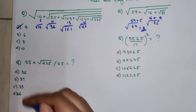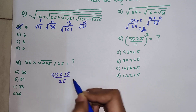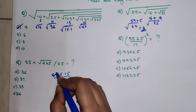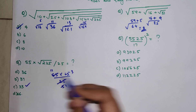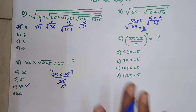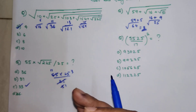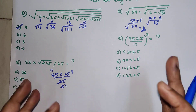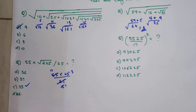Now over here we have 55 and root of 225, which we already know is 15, upon 25. This can be written as 5 elevens and 5 fives and 5 ones and 5 threes, so 11 into 3 is 33. It is super simple — you should not have taken more than 10 seconds to solve this. In these entrance exams, your entire game relies on how quickly you solve each question, as these are not rocket science but require speed and technique.